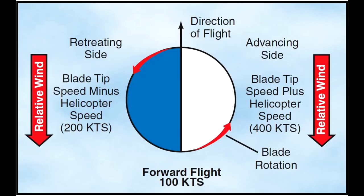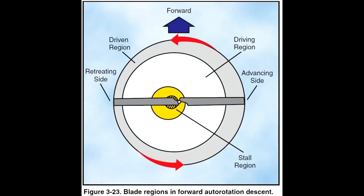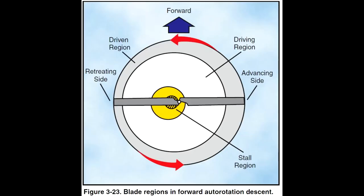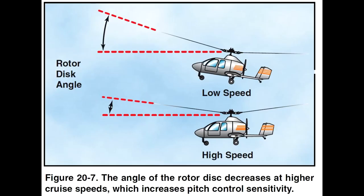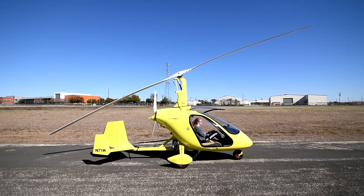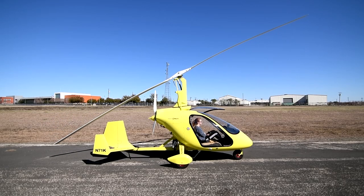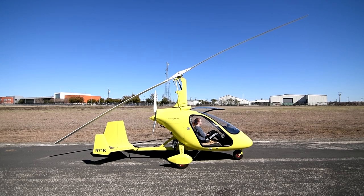Some basic pictures show the dissymmetry of lift experienced in rotorcraft. When a gyroplane is in flight, the blade is highest at the front and lowest at the back. As the blade moves forward it rises, and as it moves back it falls. This is the compensation for the dissymmetry of lift.